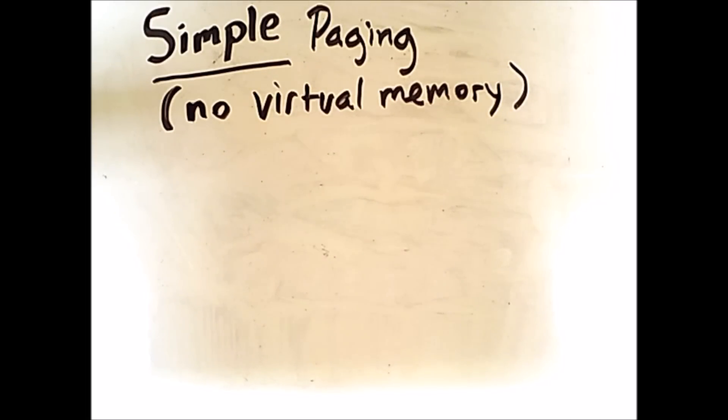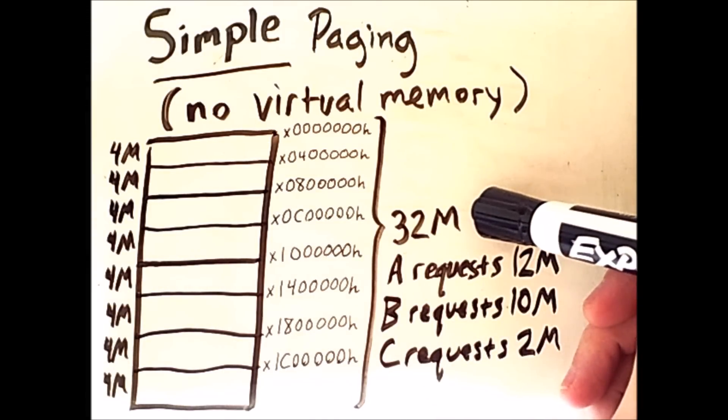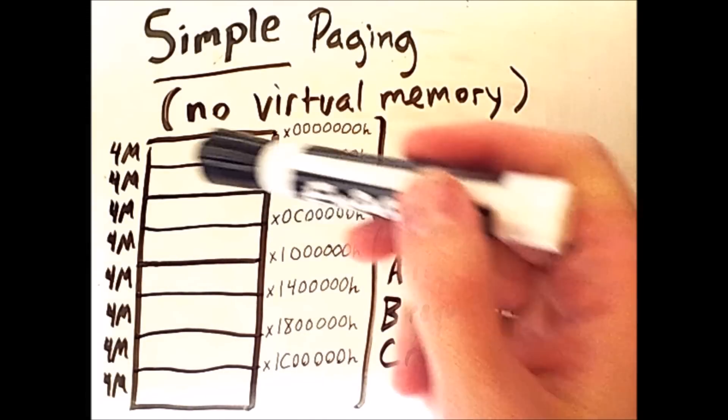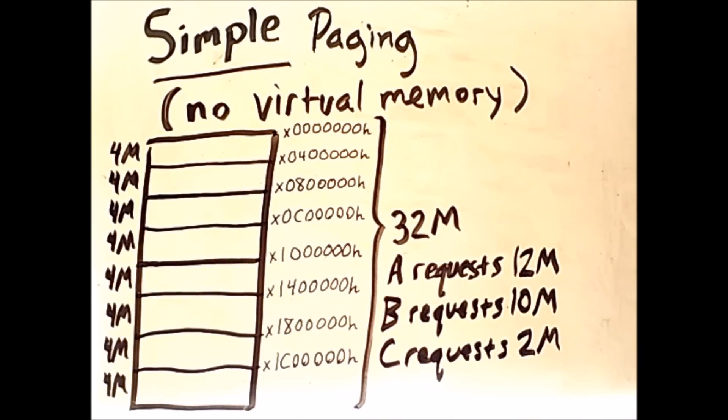Consider the following example. In this example, we have 32 megabytes of main memory, which I've broken up into 4 megabyte chunks called frames. Frames store pages, which are chunks of an executing process. Assume that processes make the following memory requests: A requests 12 megabytes, B requests 10 megabytes, and C requests 2 megabytes.